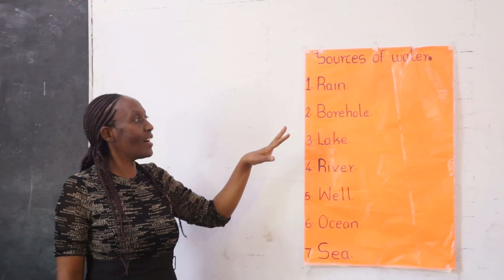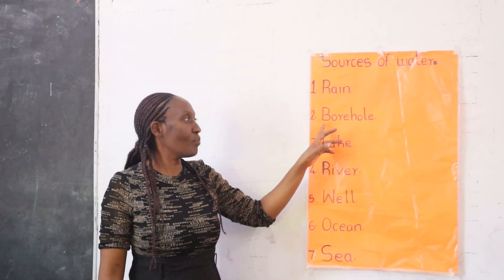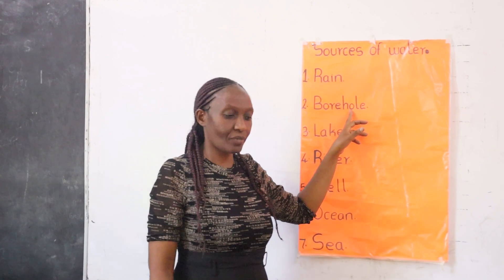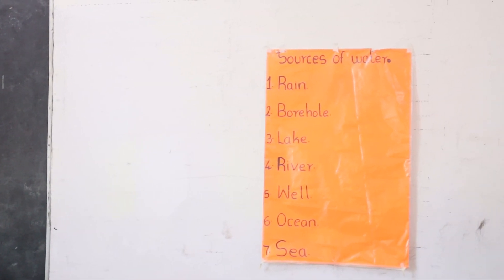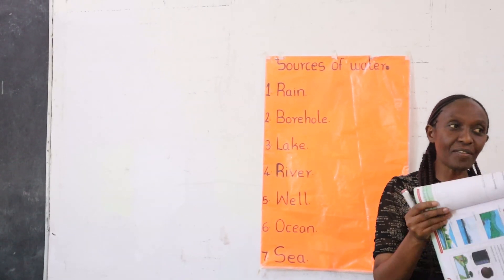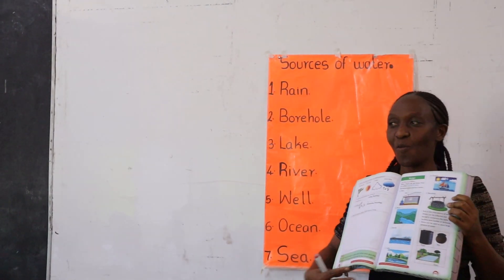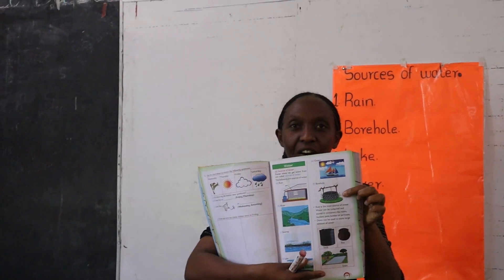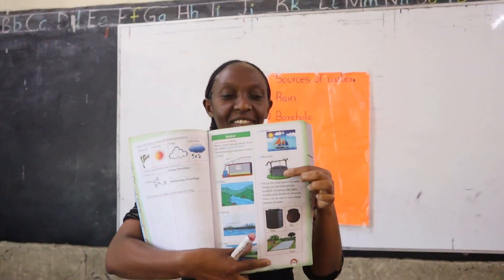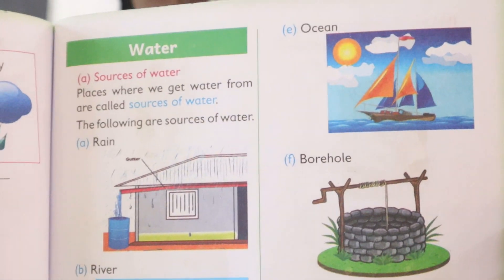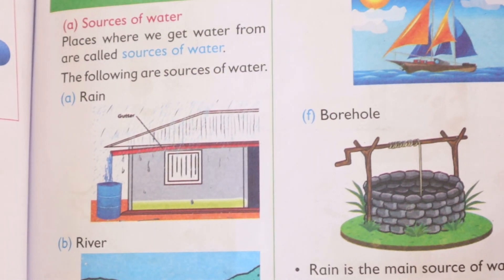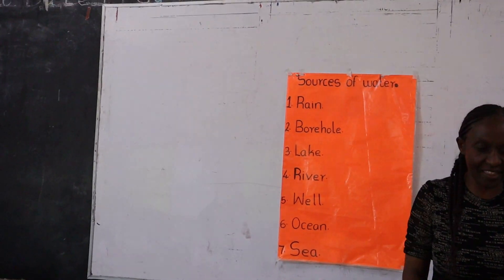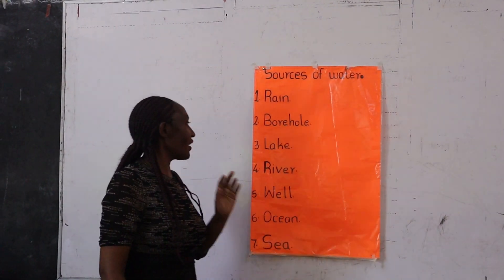Now I have another one here called borehole. Can you say borehole? Borehole. Yes, borehole is another source of water. I have a picture to show you what is a borehole. Can you see it? Yes, it's there. A borehole — that's another source of water. Very good.